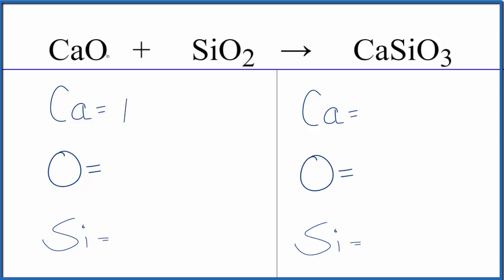We have one calcium atom and we have one oxygen atom, but we also have these two oxygen atoms, so you have to make sure you count all of them. That gives us three.